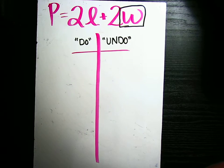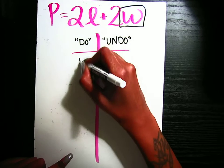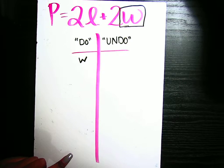And let's say we are solving for W. So the first thing we want to do is start with the variable that we're solving for. So start with W.